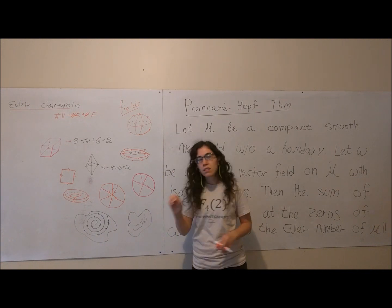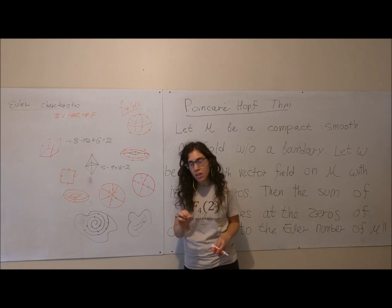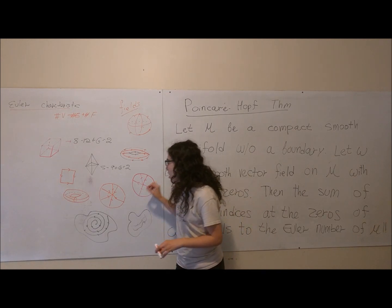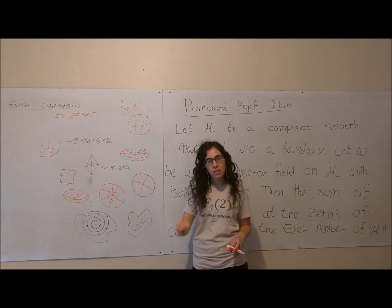There's a way to assign a unique number to each isolated zero and we call it the index of the zero.